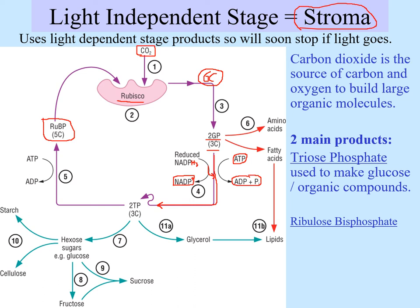The oxidised NADP and ADP go back to the light dependent stage to collect more hydrogens and be reformed via ATP synthase. We end up with two triose phosphate molecules. One of two things can happen to triose phosphate: it can either make products, which we'll talk about in a minute, or it can be stuck together and turned back into ribulose bisphosphate to start the cycle again — which also uses a molecule of ATP. Per turn of the cycle we use two molecules of reduced NADP and three molecules of ATP total.